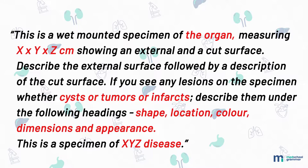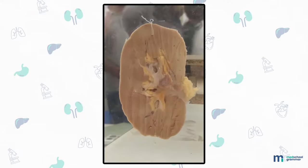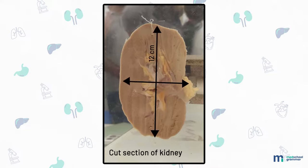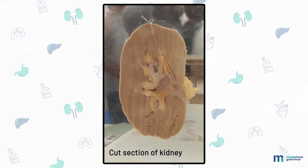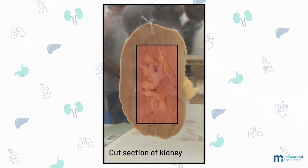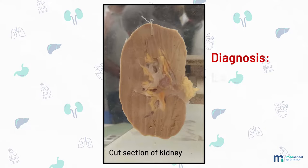Now that we have the format in mind, let's talk about the specific specimens of the renal system. Our first specimen, as you can see on the screen, can be described as: specimen of cut section of kidney measuring 12 by 6 by 1 centimeter, enlarged and pale. External surface: capsule has been stripped off, subcapsular surface has lobulated appearance. Cut surface: corticomedullary differentiation is maintained, pelvicalyceal system is normal, at places medullary congestion is seen, ureter and blood vessels are not seen. Diagnosis: large white kidney.